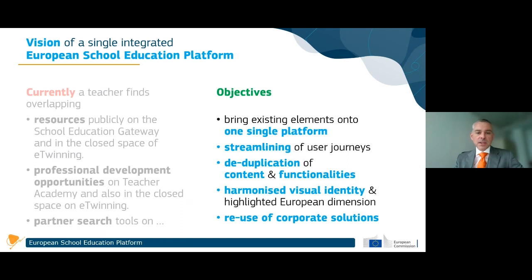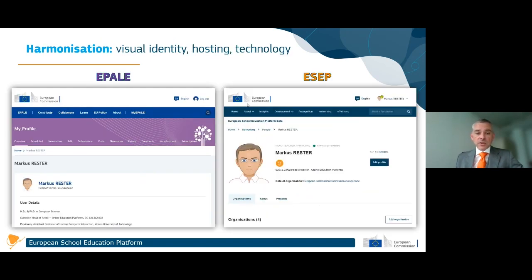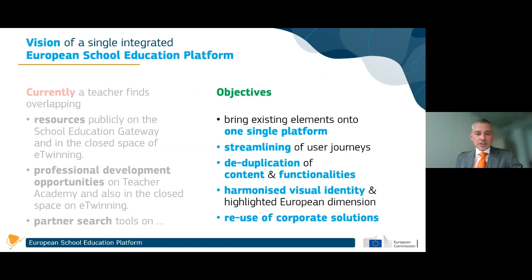That's the reason why we decided to merge them - make all of this happen in one single place. You think about professional development, there's one place to go: the professional development section in the European School Education Platform. You think about finding a partner, be it for an eTwinning project or an Erasmus project, there's one place you go: the partner finding functionality on the new European School Education Platform. We want to streamline the user journeys, deduplicate content and functionalities, and harmonize visual identity.